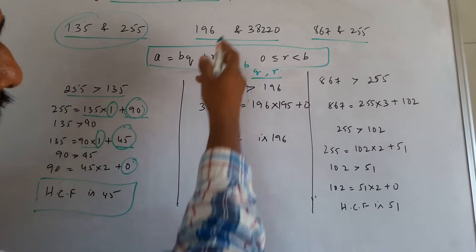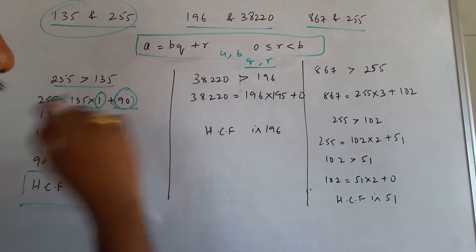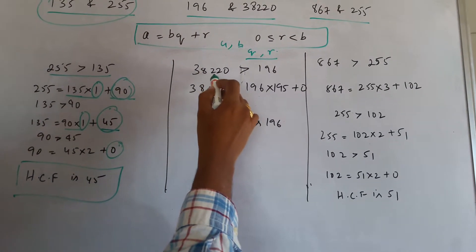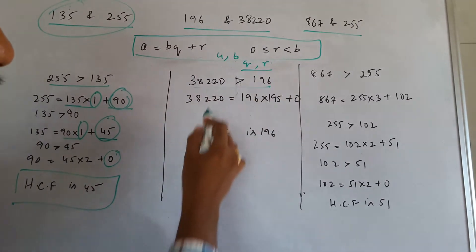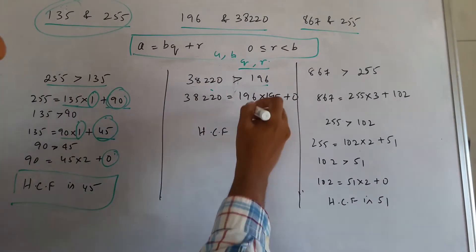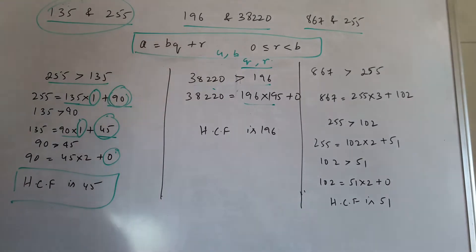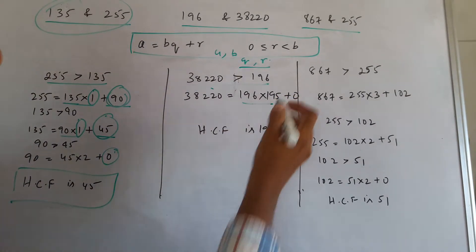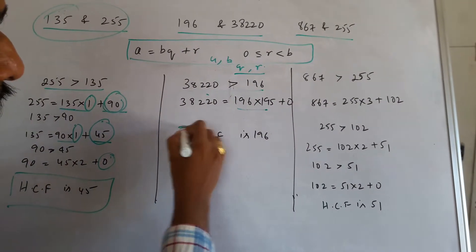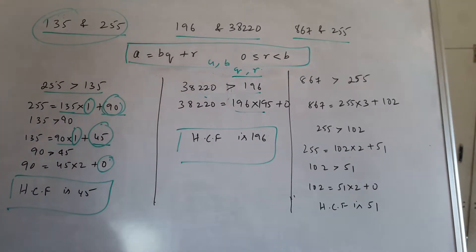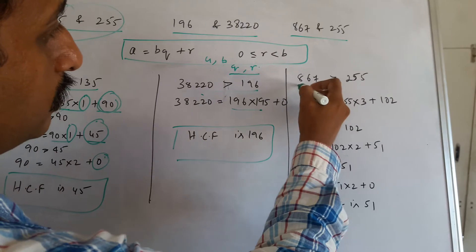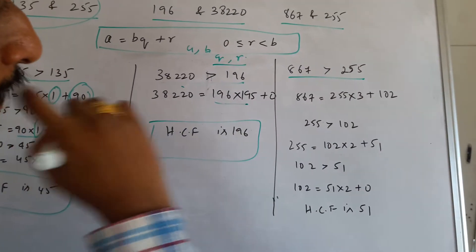Now let us see the second set of problems, which is 38,220. Here you find that this is greater than 196, and we got the exact multiple of this, which is 195 times. So the highest common factor would be 196.